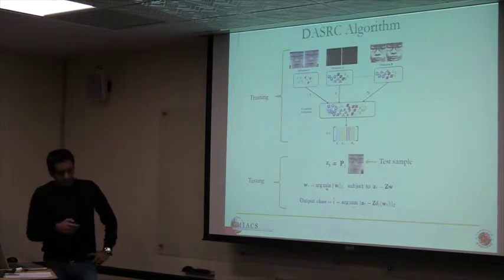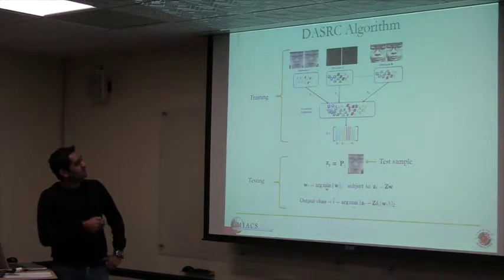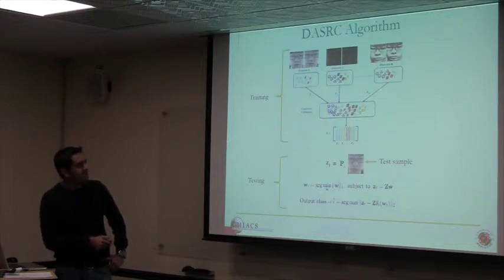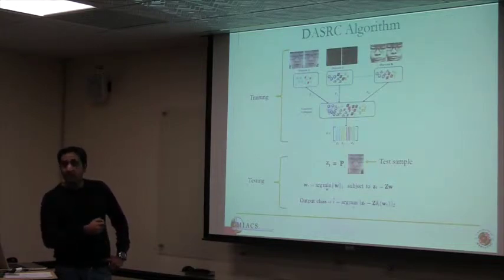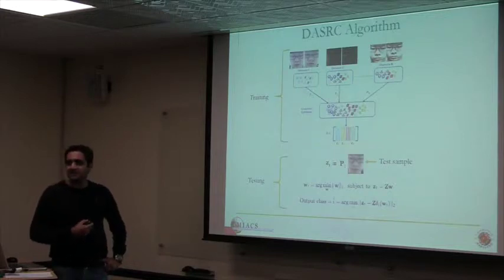Here is the overall algorithm: given training sets from different domains, we learn the projection matrices. Once learned, we project the original data onto the latent space. Given a novel test image, knowing which domain it comes from, we use the learned projection to put it in that space and apply the sparse representation-based classification.